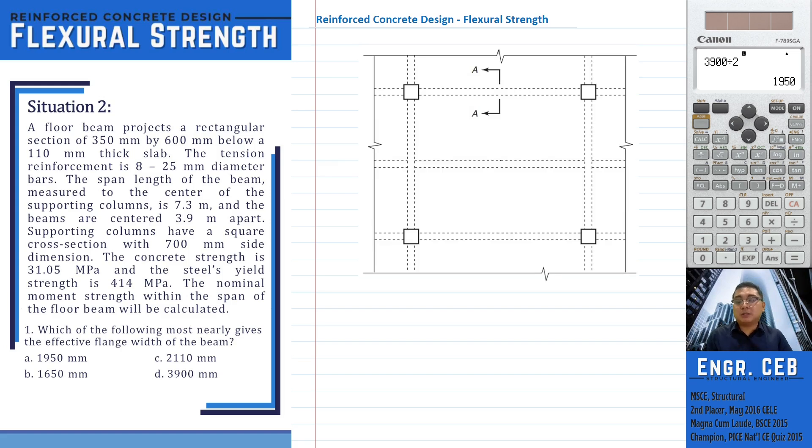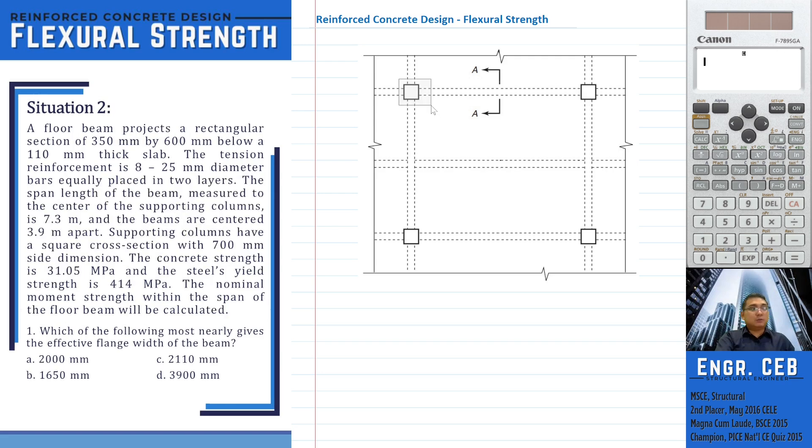In the problem, there is no given floor plan but for you to understand more the analysis of T-sections, I have shown here the possible floor plan of the problem. These are the columns, these are the members connecting the columns, and then these are the secondary beams connecting the girders.